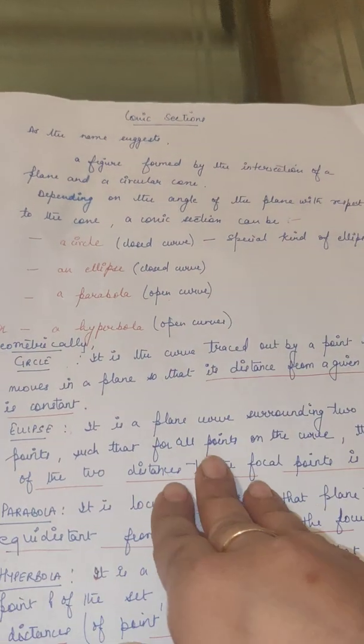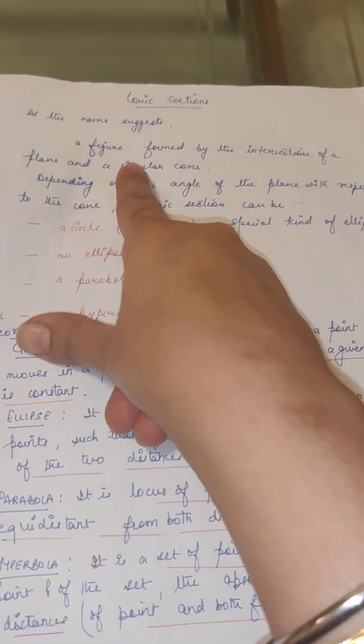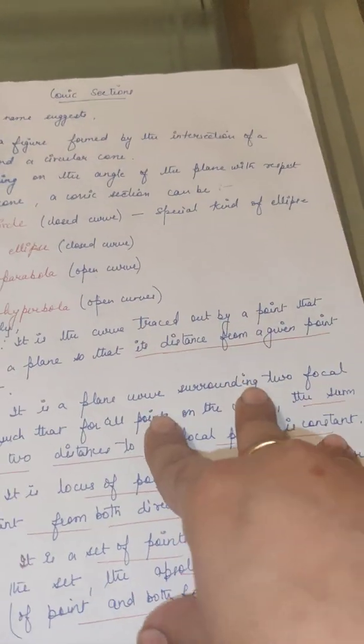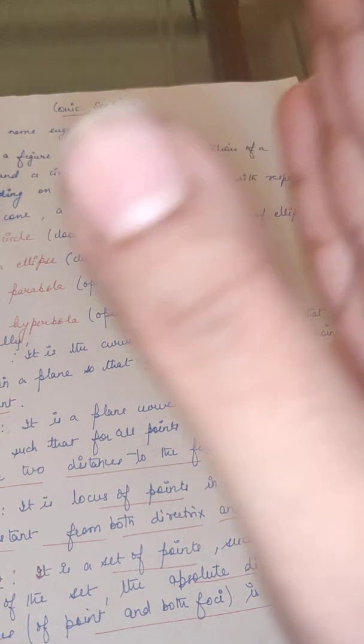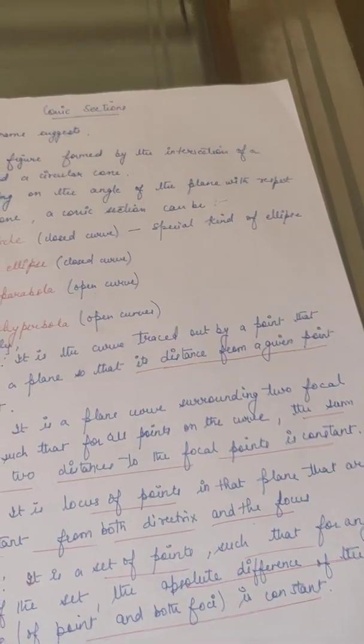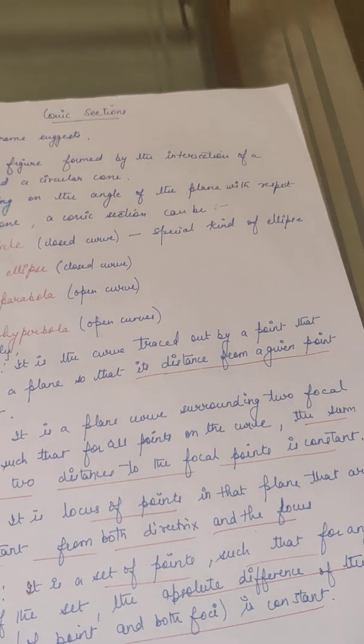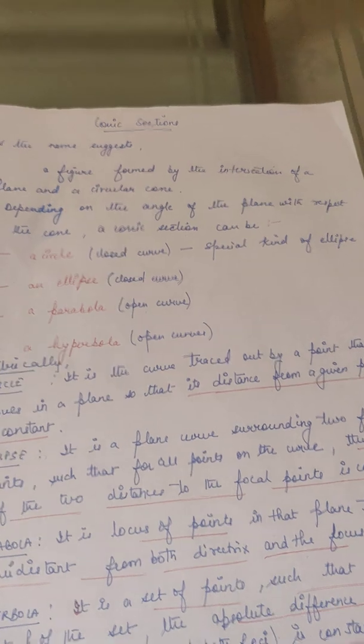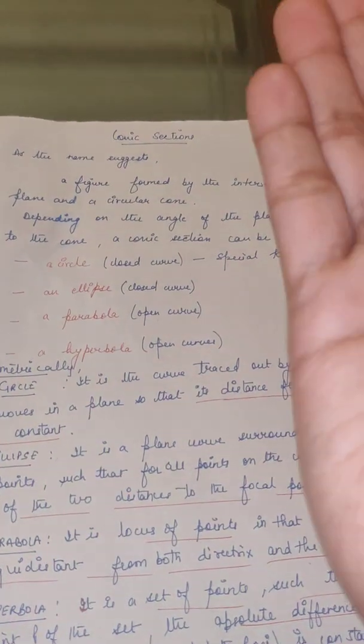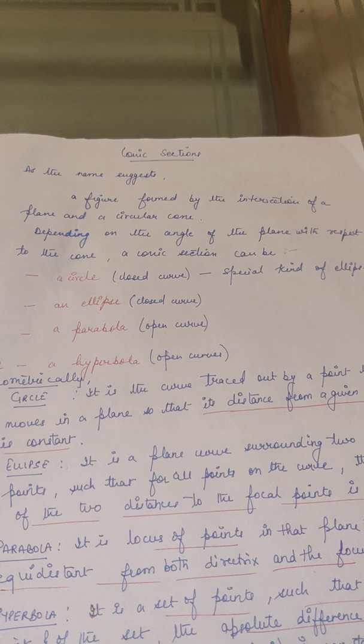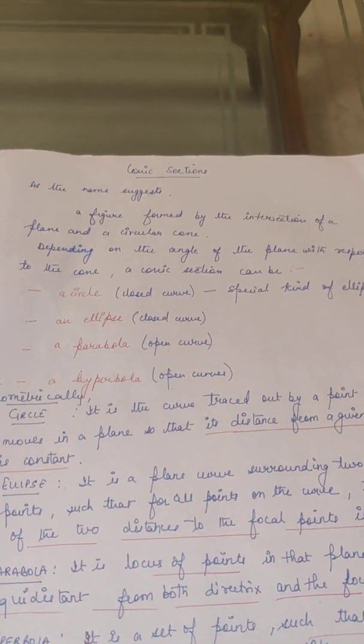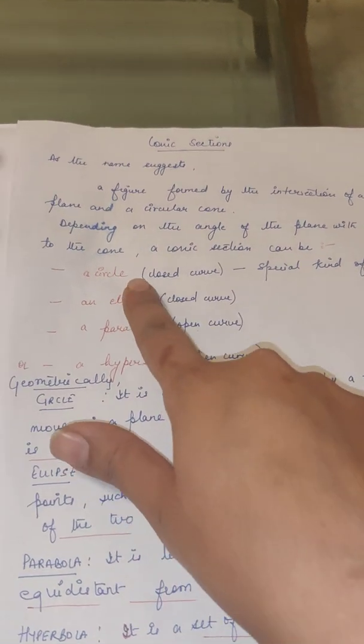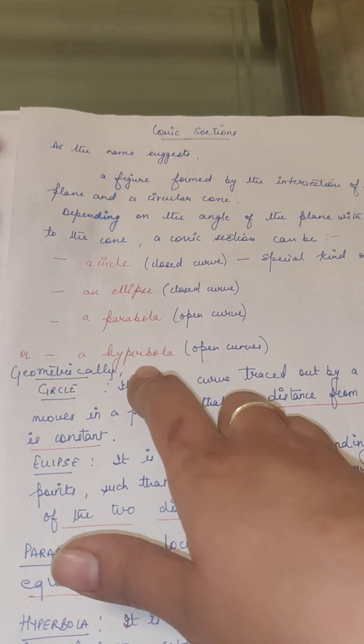Today, first we will start with a definition. A figure formed by the intersection of a plane and a circular cone. If you cut the cone with the help of a plane, you will get different portions, different sections of a cone. They are named as conic sections. Depending upon the angle of a plane—perpendicular to the base, parallel to the base, or at some angle to the base—we will have four different conic sections: first is a circle, second is an ellipse, third is a parabola, fourth is a hyperbola.